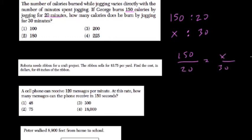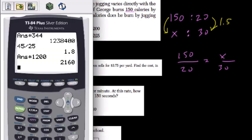How would we like to solve this? I'm going to use my ratio here. 20 goes into 30 1.5 times, so 150 will go into this new calorie amount also 1.5 times. So I just do 150 times 1.5, which is 225.